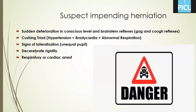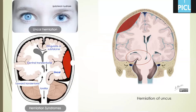How to suspect impending herniation in a patient with raised ICP: sudden deterioration in conscious level; brain stem reflexes such as gag and cough that were present and now absent; development of Cushing's triad; signs of lateralization such as unequal pupils or sudden hemiparesis; decerebrate rigidity; or respiratory or cardiac arrest. At this time, intubate the patient if not already done, reduce IV fluid, give mannitol and hypertonic saline, optimize head position, and control CO2 and blood pressure. This was the last topic. I hope you got some benefit from this lecture. Thank you.